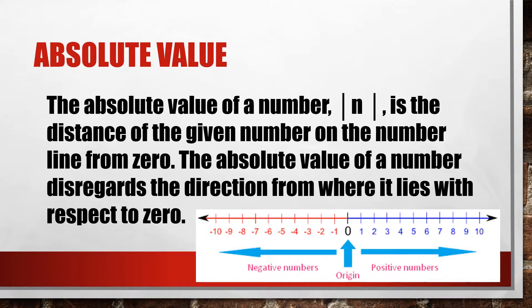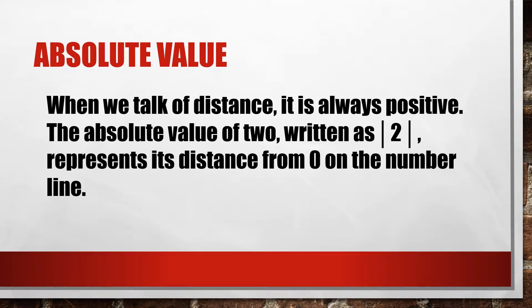This is a horizontal number line. We have zero as the origin. Numbers going to the right are positive numbers, and numbers going to the left are negative numbers. When we talk of distance, it is always positive. The absolute value of 2, written as |2|, represents its distance from zero on the number line — how far 2 is away from zero.